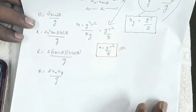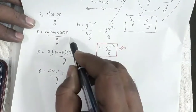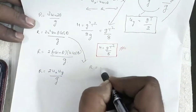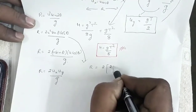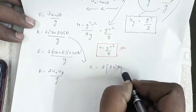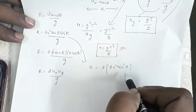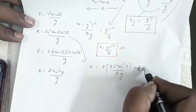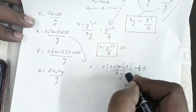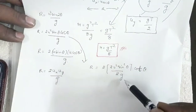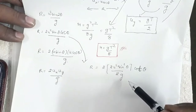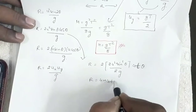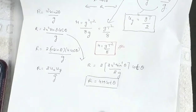This expression can also be written as R = 2 × (2u² sin²θ / g) × cotθ. Since u² sin²θ / 2g is the maximum height h, this implies R = 4h cotθ. So this is another important relation between range and maximum height.